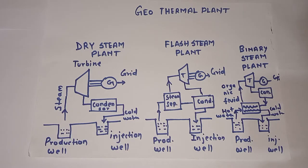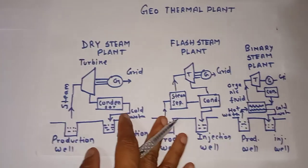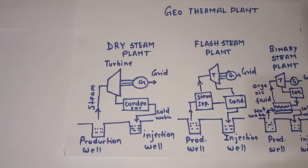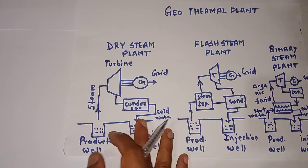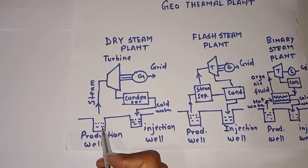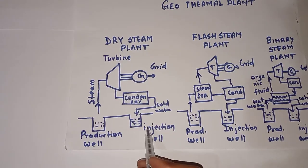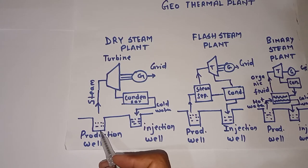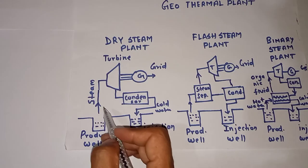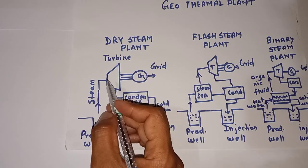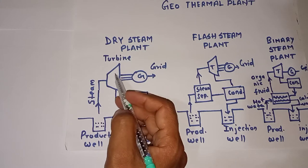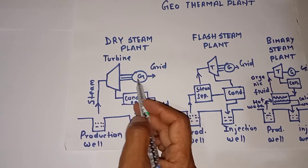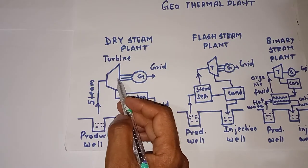First we will see the dry steam plant. This is a very simple method to get the thermal energy and convert it to electrical energy. At the surface there are two wells: one is called the production well and another is the injection well. From the production well, hot steam comes out and is directed forcefully to the turbine blades, which move and are coupled with the generator, producing mechanical energy.